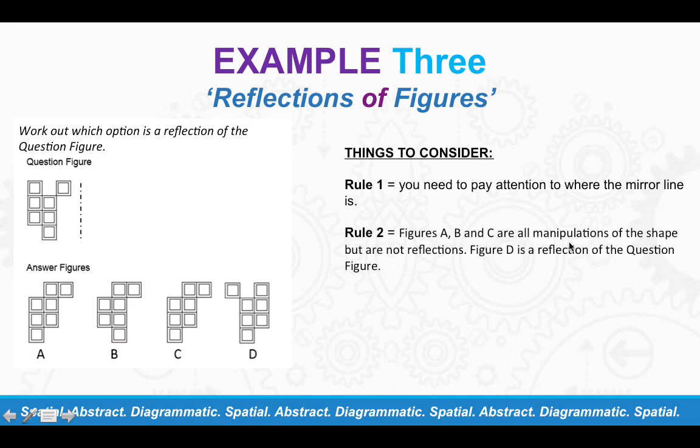And figures A, B and C are all manipulations of the shape. So basically these squares have been moved in a slightly different place. So you know it's not an actual reflection of the question figure. So as you can see for answer option A, you can't have two squares together like that because that's not what's shown in the question figure. So you can rule out that one. Again, you can rule out answer option B because we know that the two squares on top are not side by side. So we can rule that one out. Again with C, they're not together. So you can rule that out. So the answer option is D.